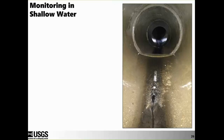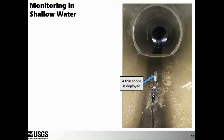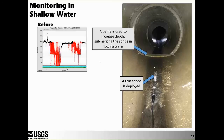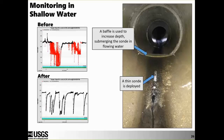One challenge in some environments is monitoring in very shallow water — if probes aren't submerged, you won't collect the data you expect. For a project monitoring stormwater pipes with very little flow at base flow, a thin instrument was chosen, but even that alone didn't produce the quality record expected. The solution was using a baffle upstream of the instrument to increase depth and submerge the sonde more consistently in flowing water, resulting in a much improved record requiring far less oversight.